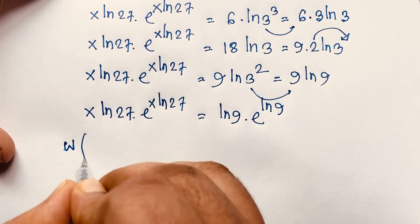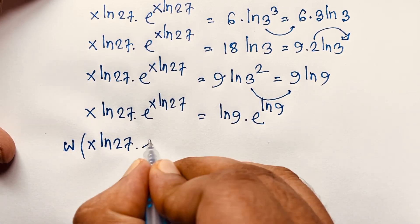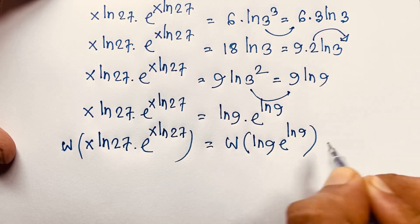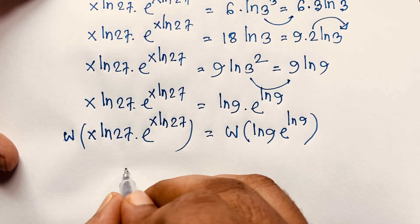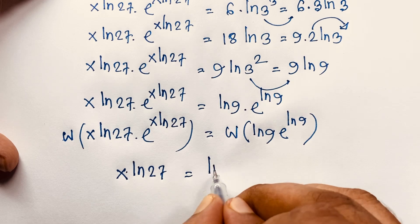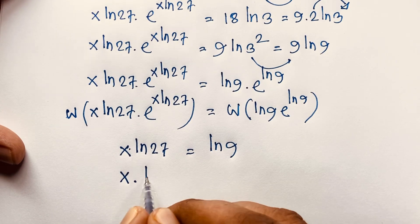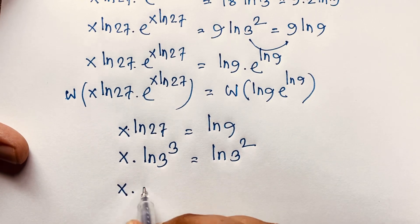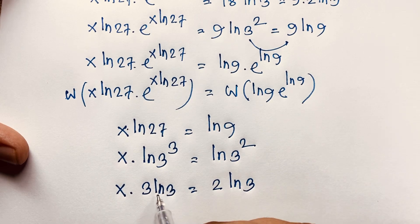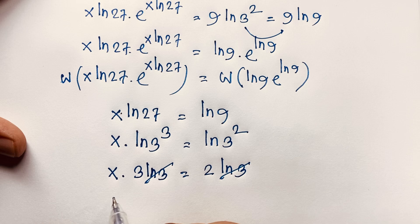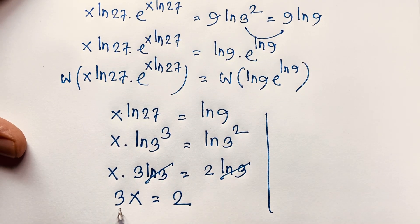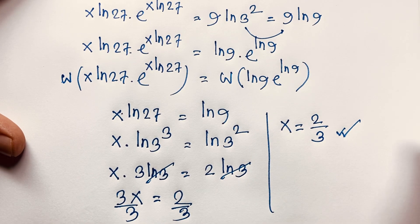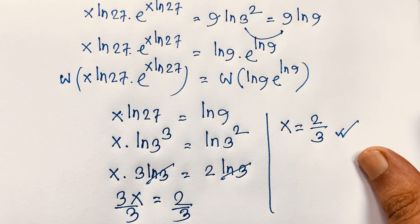Now I apply the Lambert W function to both sides. Since both sides are in the form a·e^a, we get x·ln27 = ln9. Writing ln27 = ln(3³) = 3·ln3 and ln9 = ln(3²) = 2·ln3, we get 3x·ln3 = 2·ln3. The ln3 cancels, giving 3x = 2, so x = 2/3. This is our final answer.